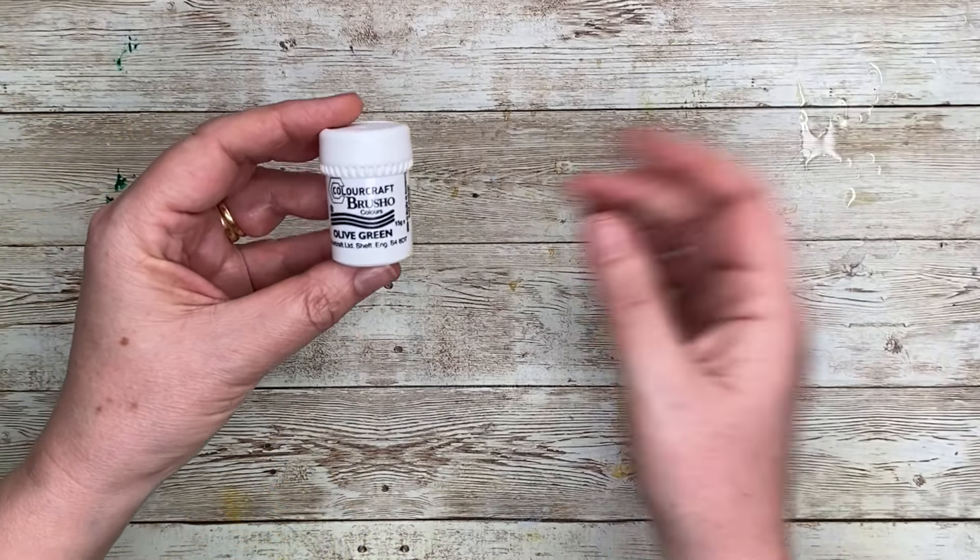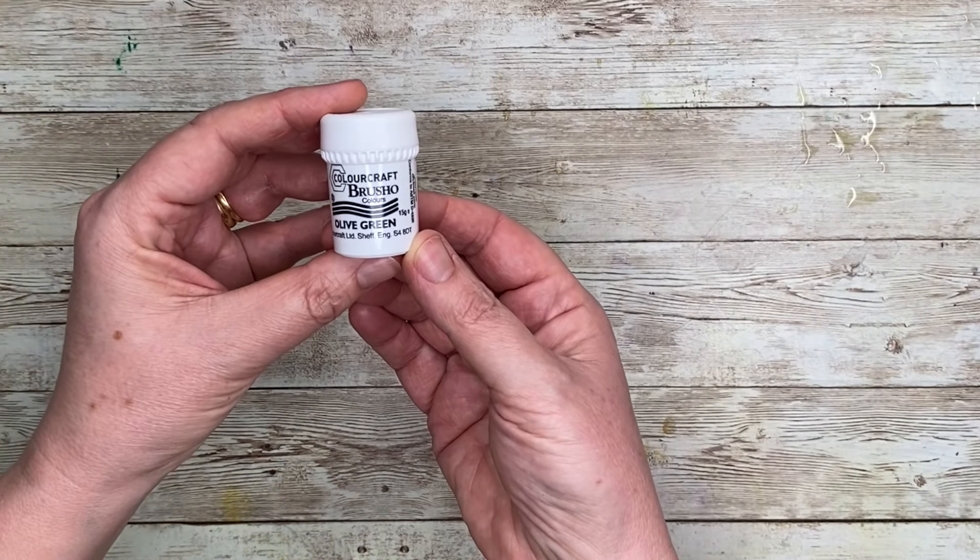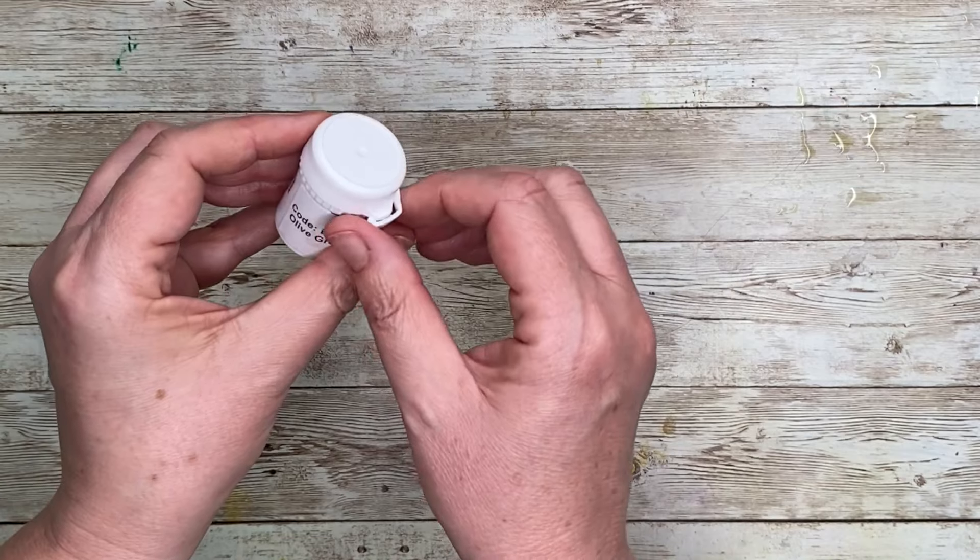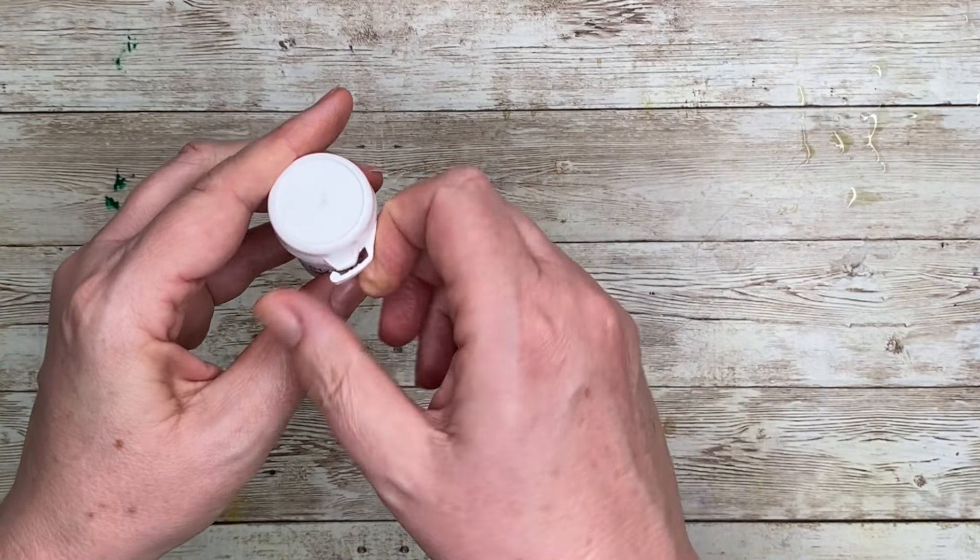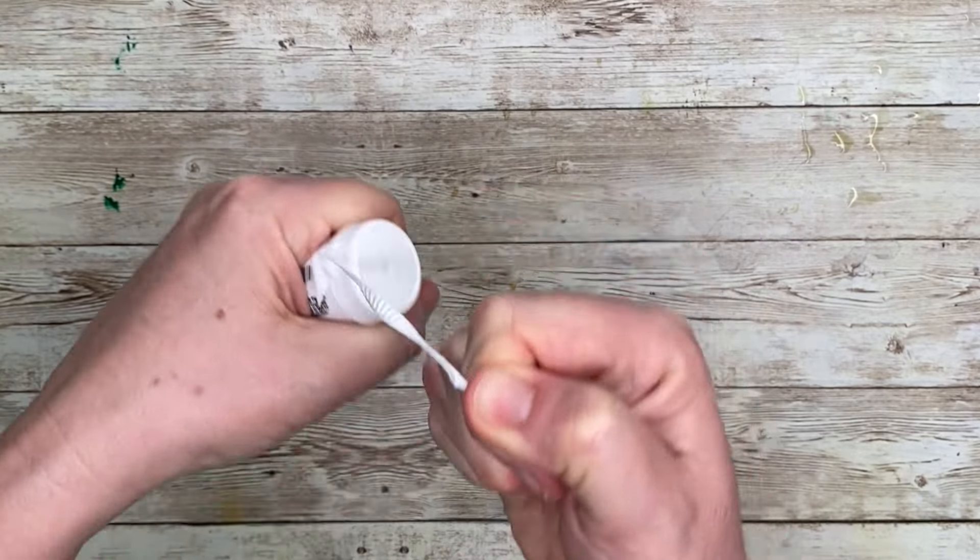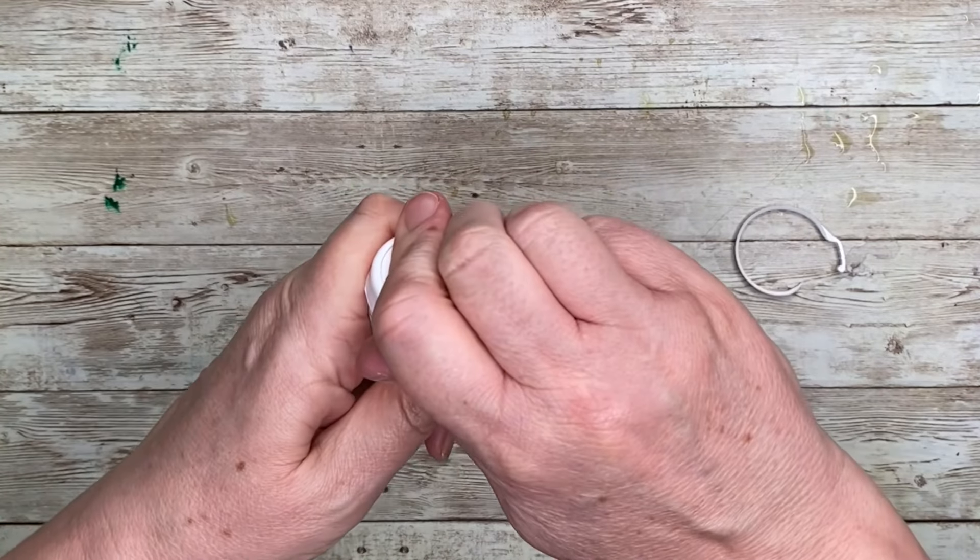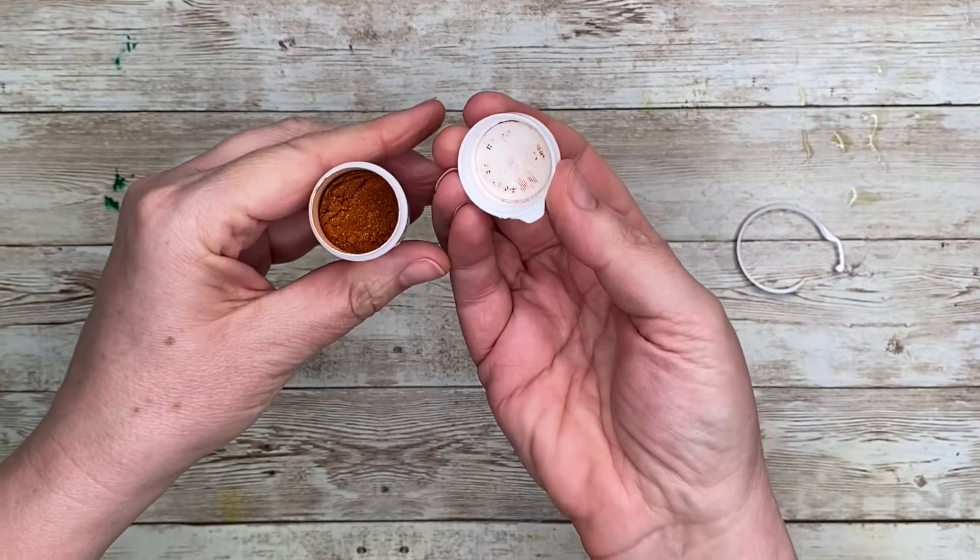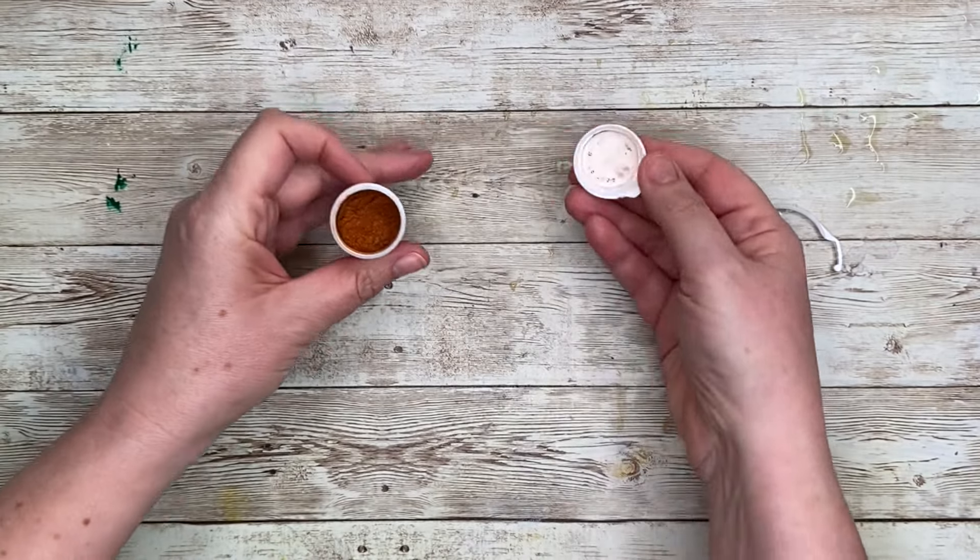For a full list of all the materials I'm using, check out the description below. This is the little pot. The Brusho comes in and I'm just taking off the tag here now to remove it and just removing the lid. And here it is, all the crystallized powder here. I'm going to show you the different ways of using this. It's just watercolor paper.